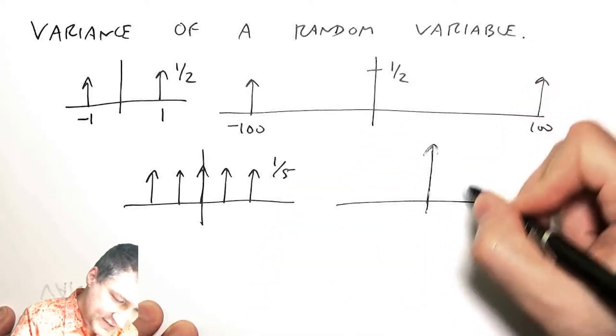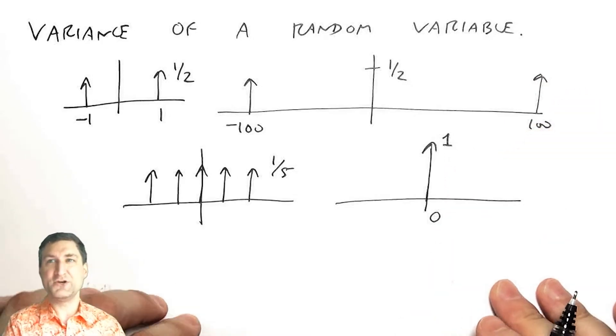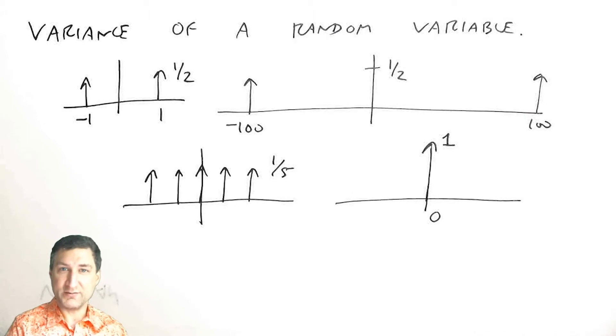Let's talk about a constant. This constant is at zero and has probability one. So all of these are random variables that have mean or expected value equal to zero.